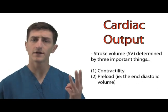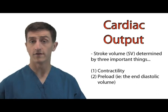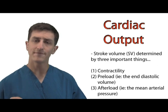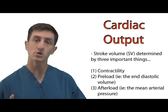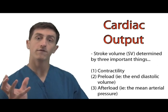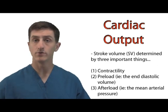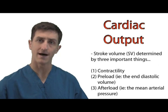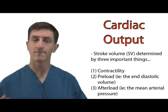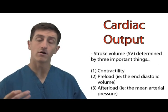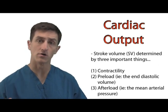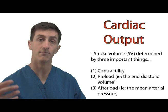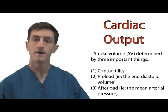The third component is what's known as afterload. Afterload is the pressure the heart must overcome to eject blood into the rest of the body. This is basically the mean arterial pressure, which is a component of blood pressure.